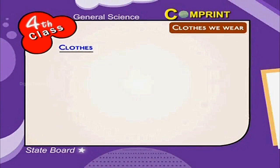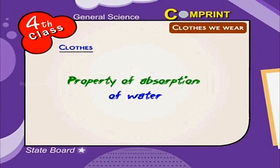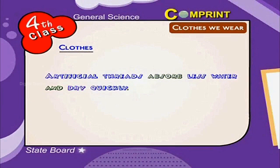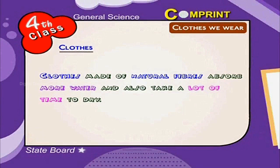Property of Absorption of Water: The property of absorption of water and drying varies according to type of cloth. Artificial threads absorb less water and dry quickly. Clothes made of natural fibers absorb more water and also take a lot of time to dry.